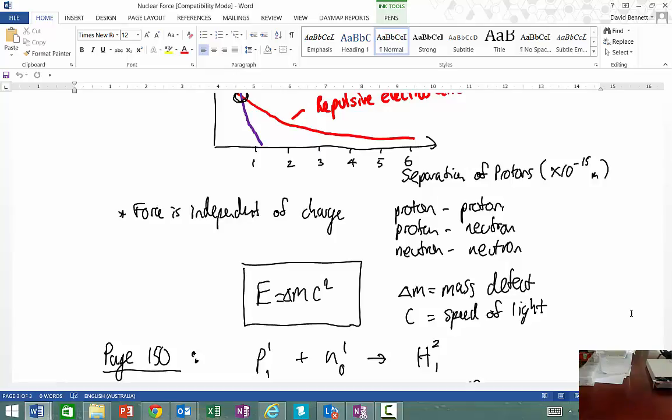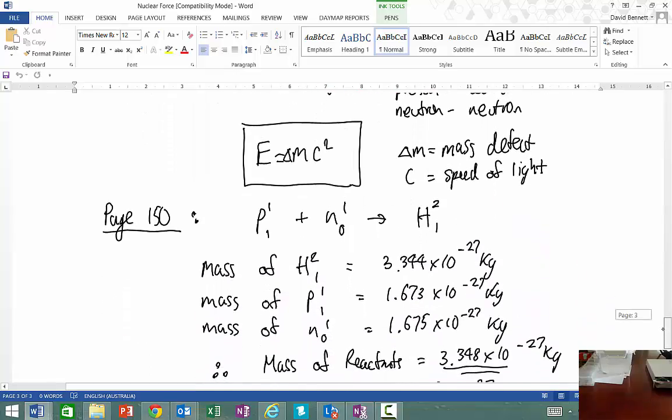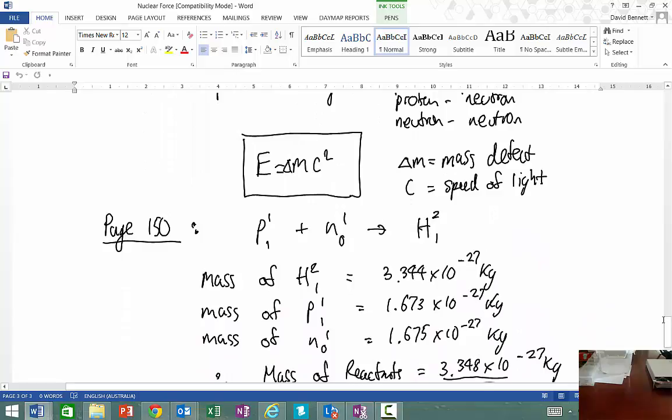The famous equation E equals mc squared is mass defect times the speed of light squared. Here's an example from page 151. We have a proton plus a neutron to produce a hydrogen atom, which is actually deuterium, H-2. The mass of deuterium is 3.344 × 10^-27 kg. The mass of a proton is 1.67 × 10^-27 kg, and the mass of a neutron is 1.675 × 10^-27 kg.